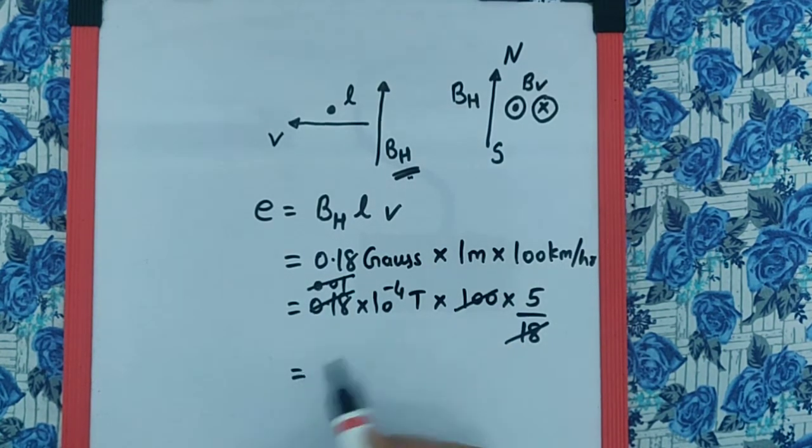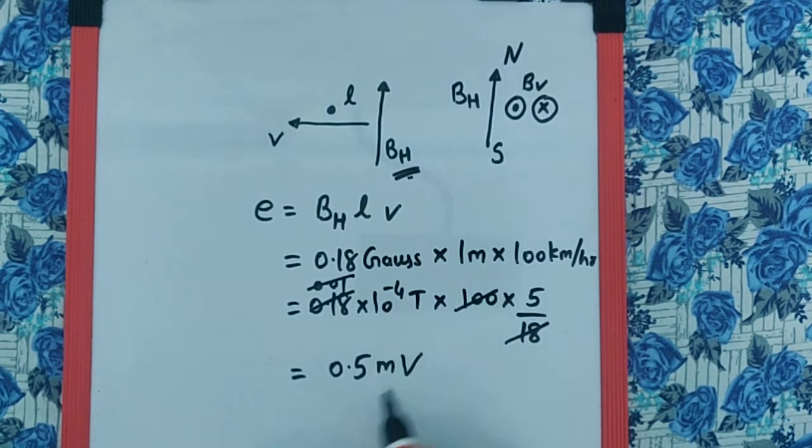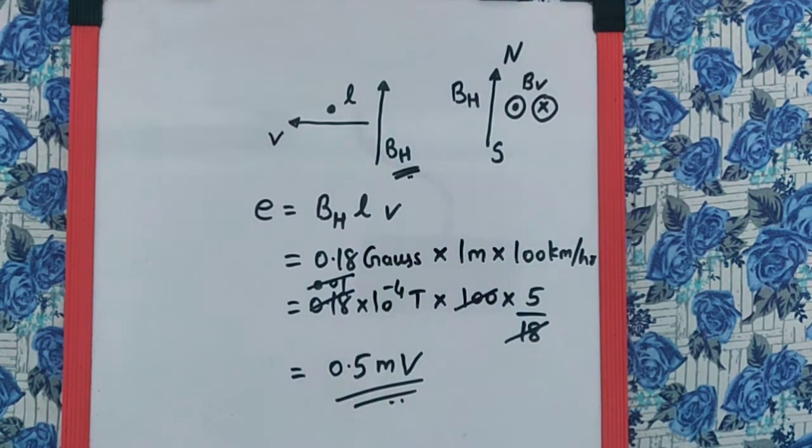So now if we cancel this, we get this as 0.01 and this 0.01 cancels with 100. That makes this as 5 times 10 raised to minus 4 volts, which is nothing but 0.5 millivolts. And that is the final answer.